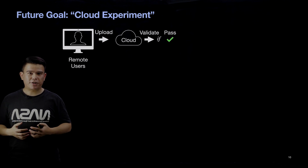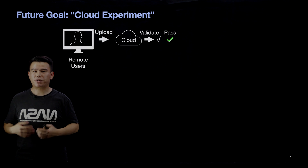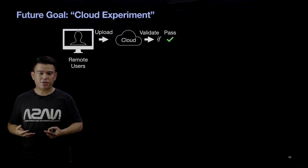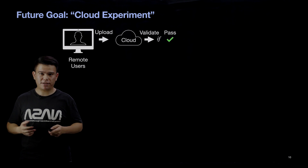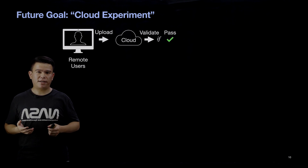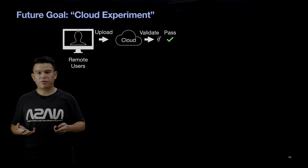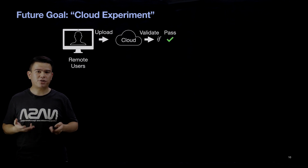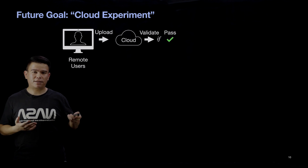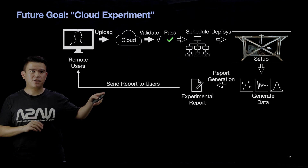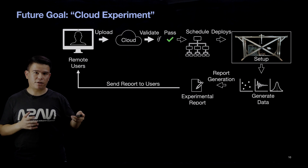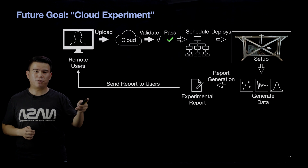After finishing our experiments and building this system, we realized one problem: even though we made our system open-access and our design files freely available, it still takes time and effort to build and maintain such a complicated system. That's why we started thinking about the idea of cloud experimentation. For example, if you're a remote user, you can upload your controller to the cloud, and we can validate whether your controller works. If it does, we can deploy it to the real-time system, run it on our experimental setup, generate a dataset, gather an experimental report, and send it back to you.